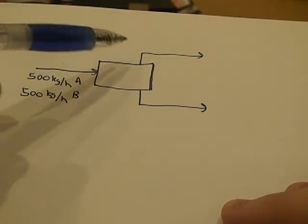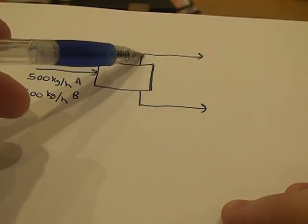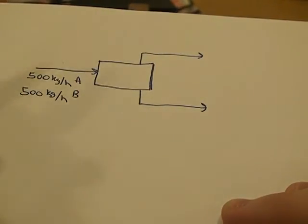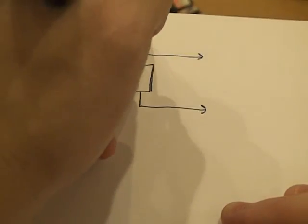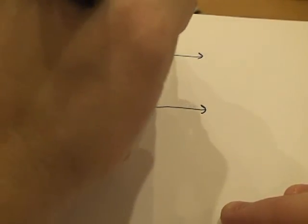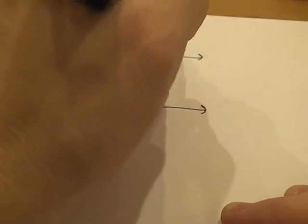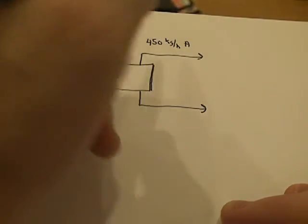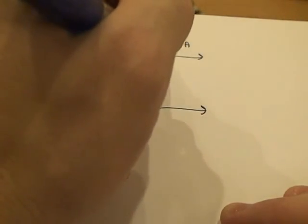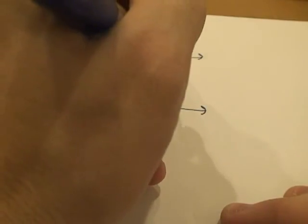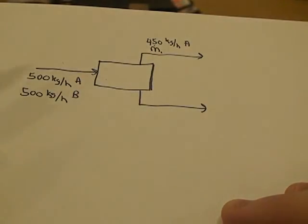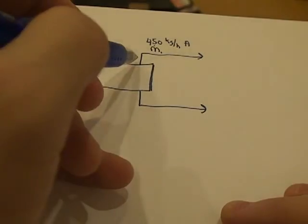And then, on our top stream here, our overhead stream, we know that we have 450 kilograms per hour of A coming out, but we don't know how much B. So we denote that as M1 for our mass flow rate of B in the top overhead output stream.